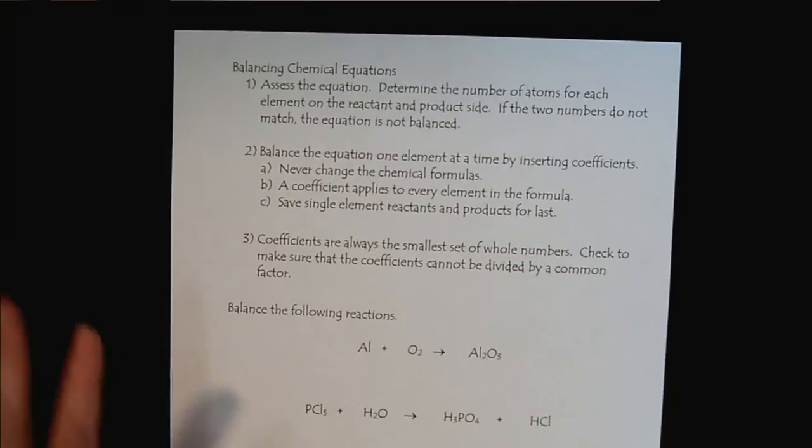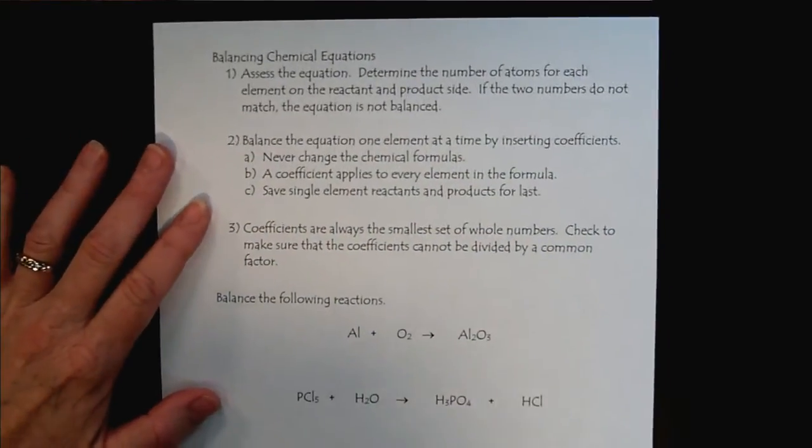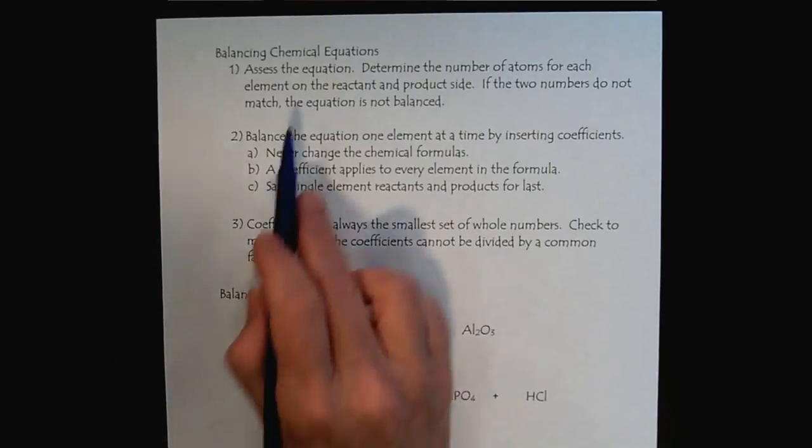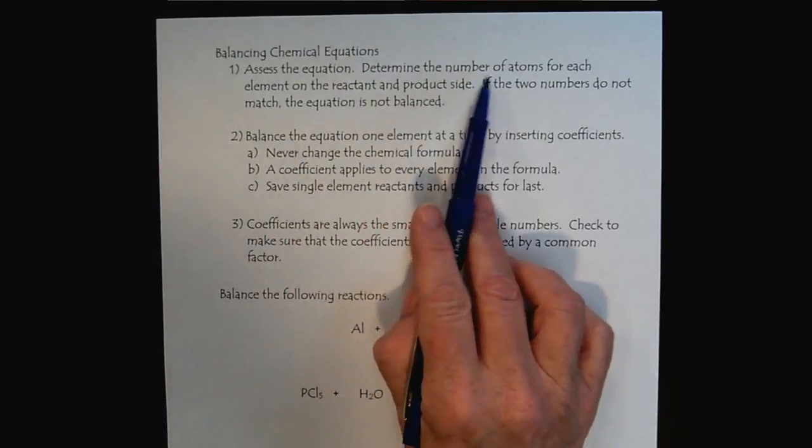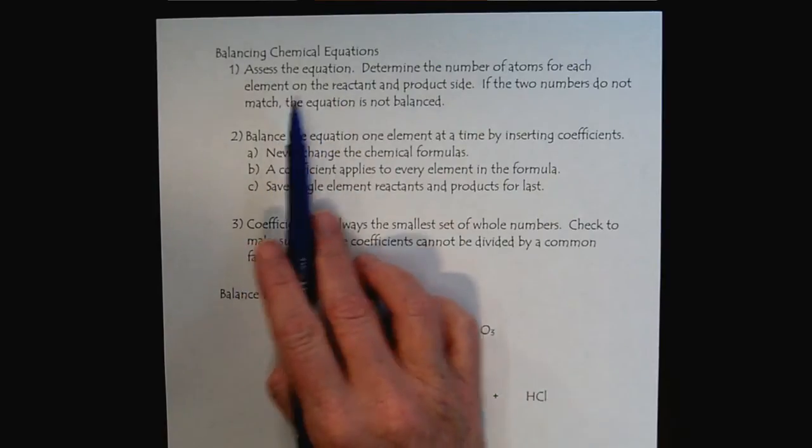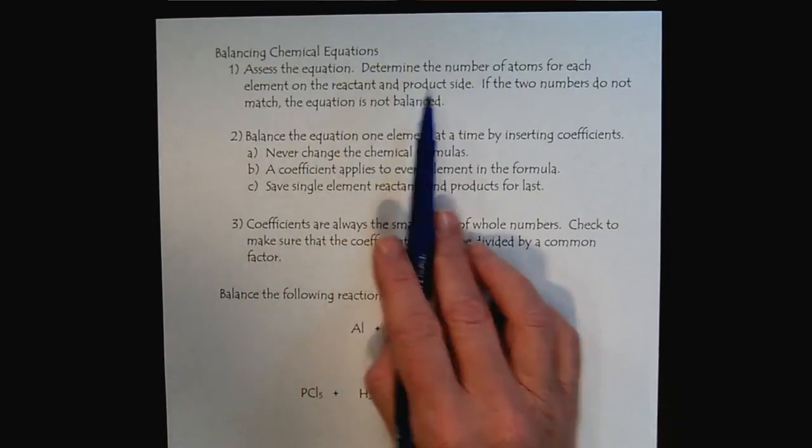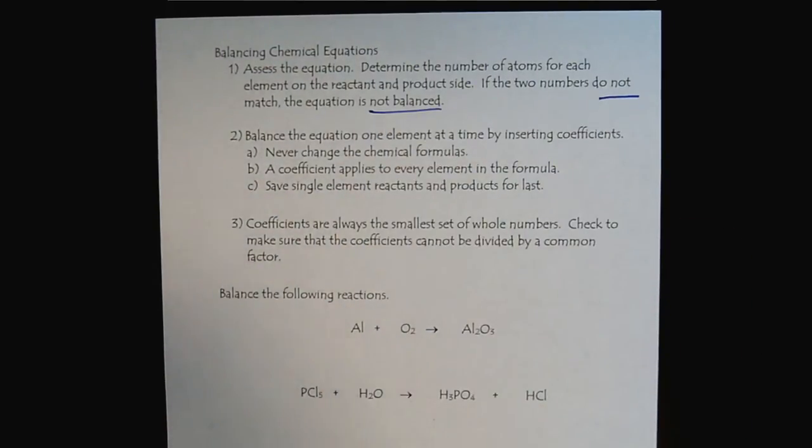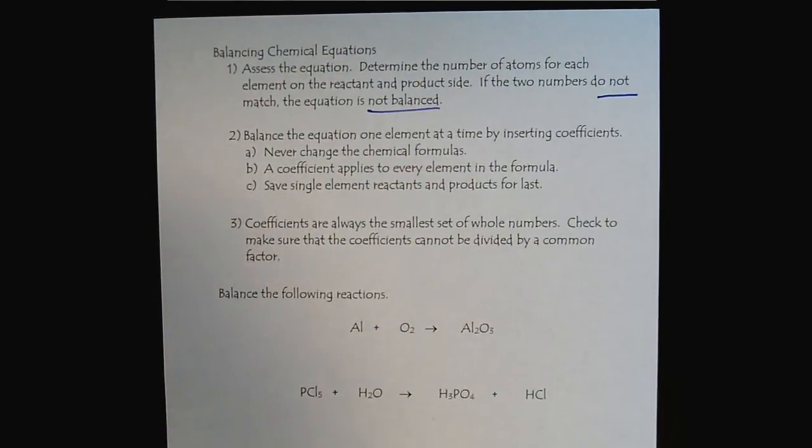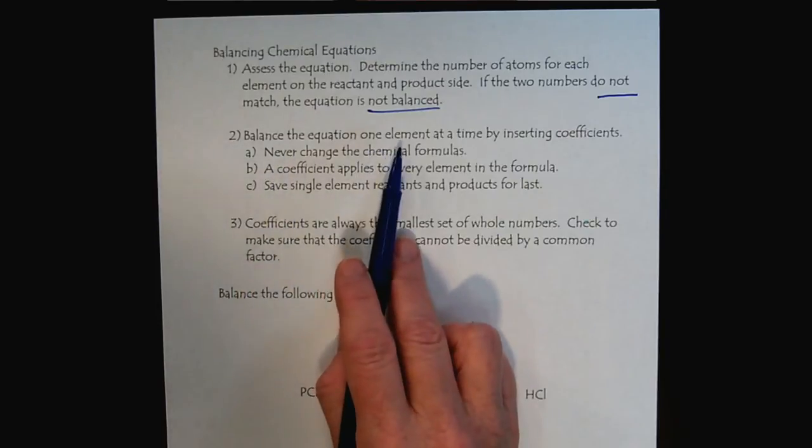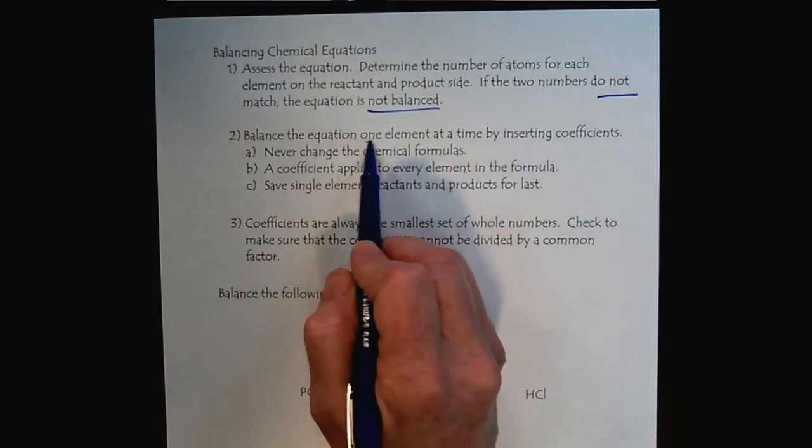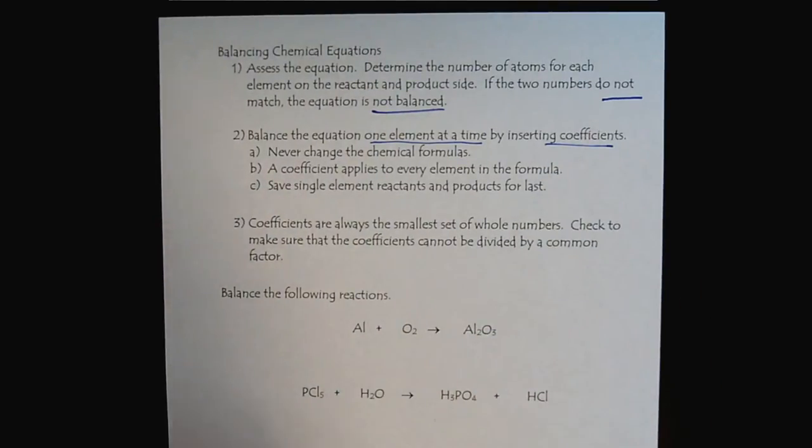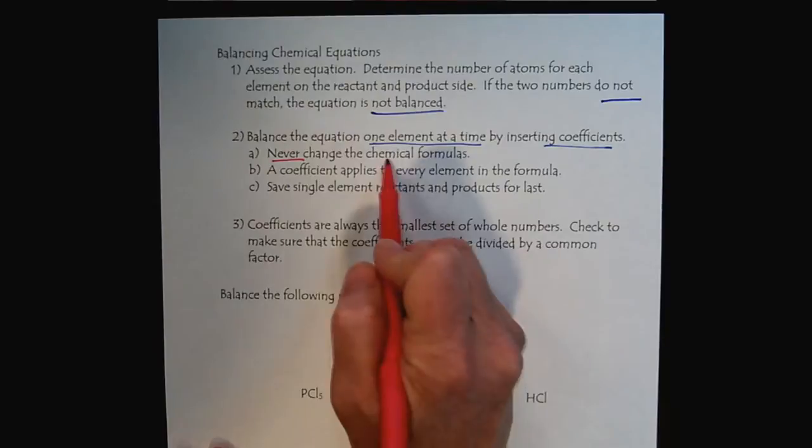The first thing we want to do is assess the equation, looking at the number of atoms of each element on the reactant and the product side. If the two numbers do not match, then it's not balanced. We're going to balance one element at a time by adding coefficients. We never change the chemical formula, that comes from valence electrons and the octet rule.